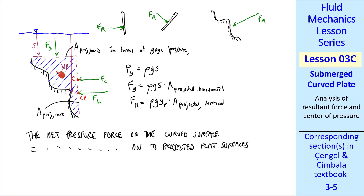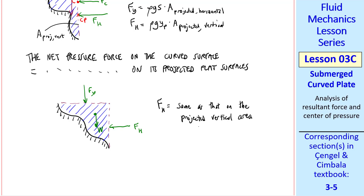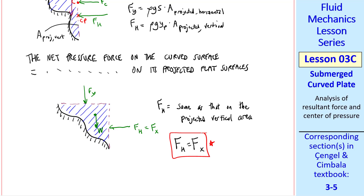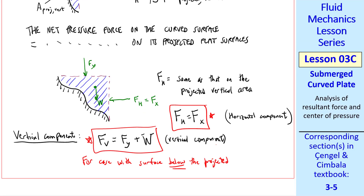But we also have to consider the volume of this enclosed chunk of water. Consider this chunk of water as a control volume. We have some horizontal pressure force, a vertical pressure force, but we also have to consider the net weight W of this water. Since W acts vertically, the horizontal force Fh is the same as that on the projected vertical area. In the notation in the book, we also call this Fx — x is horizontal and y is down. So Fh equals Fx, the horizontal component. The net vertical component of the force acting on this curved surface in the downward direction is Fy, but we must add the weight of this water, so Fv = Fy + W. This is for the case with the surface below the projected horizontal area.